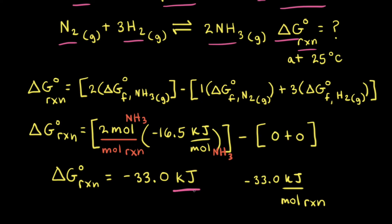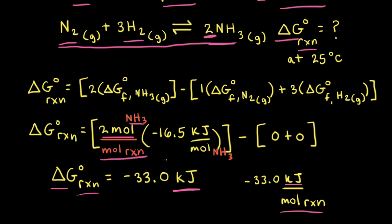Textbooks often give the units as kilojoules for the standard change in free energy of a chemical reaction. However, sometimes you also see kilojoules per mole of reaction. Per mole of reaction simply refers to how the balanced equation is written — here we have the formation of two moles of ammonia, so we can write a conversion factor of two moles of ammonia per one mole of reaction. For standard free energies of formation, the units are kilojoules per mole of the substance — in this case, negative 16.5 kilojoules per mole of ammonia — so moles of ammonia cancel out, giving kilojoules per mole of reaction.